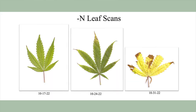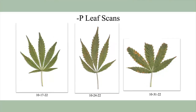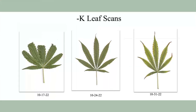This is an example of what deficiencies can look like at different levels for nitrogen, phosphorus, and potassium deficiency in cannabis sativa. These images are courtesy of Homa for her capstone project on nutrient deficiencies in cannabis.